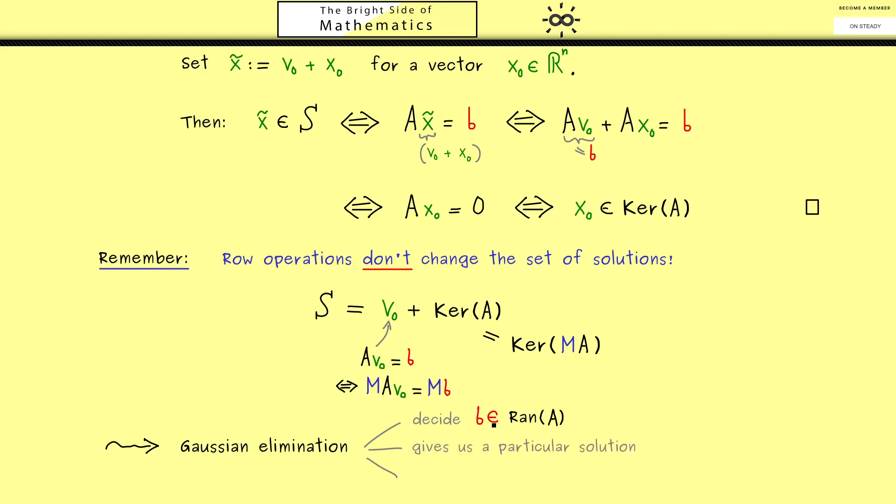Then in the other case, we know there is at least one solution of the system, hence our algorithm here should give us a particular solution. And this one is the vector v_0 from before.